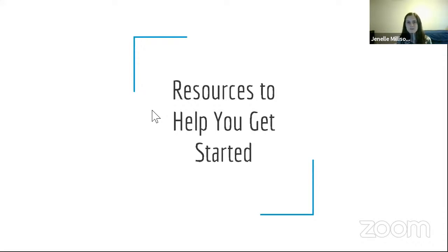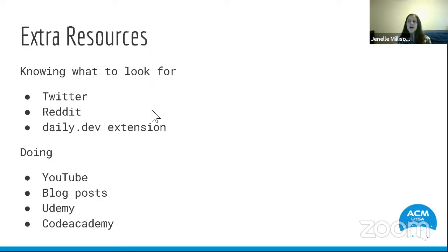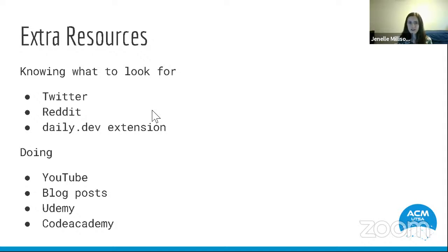Now some resources to help you get started in exploring tech. Something important is knowing what to look for — you need to know what resources will help you do what you want to do, and also what's relevant in the field to keep up to date. Knowing what to learn next can be a big problem. For example, using Twitter to follow different people in tech studying the same field you're interested in — like machine learning — gives you headlines you can explore further and ideas for what to work on next.